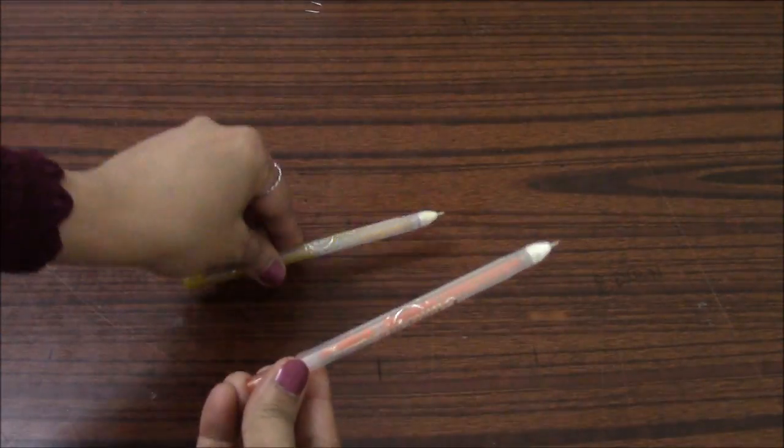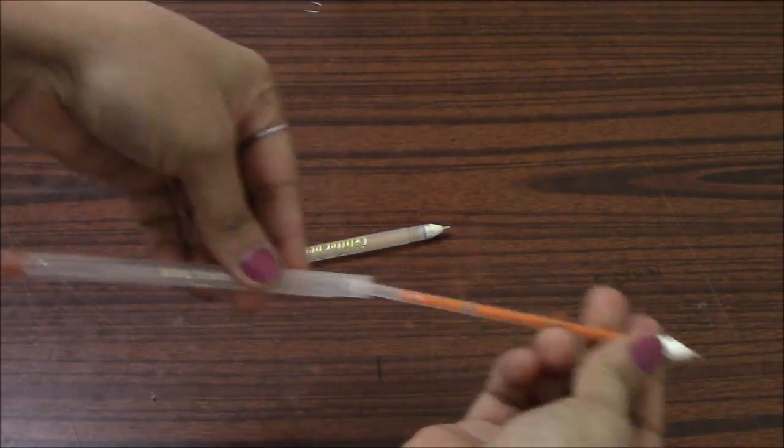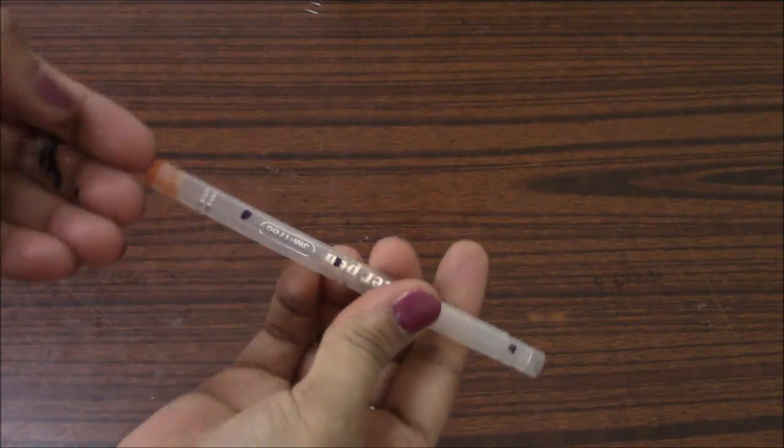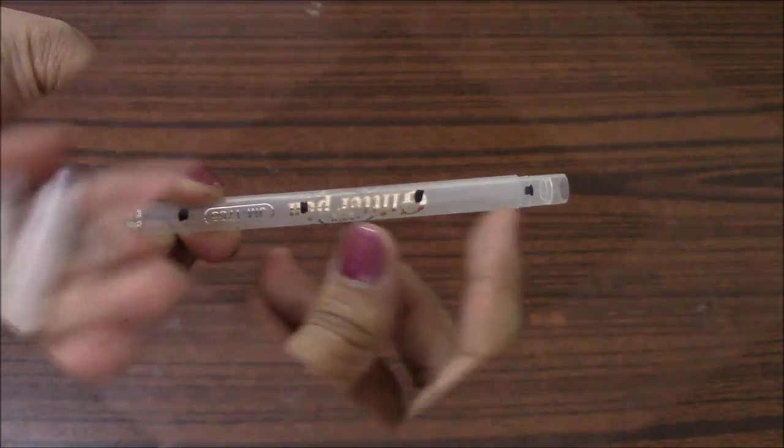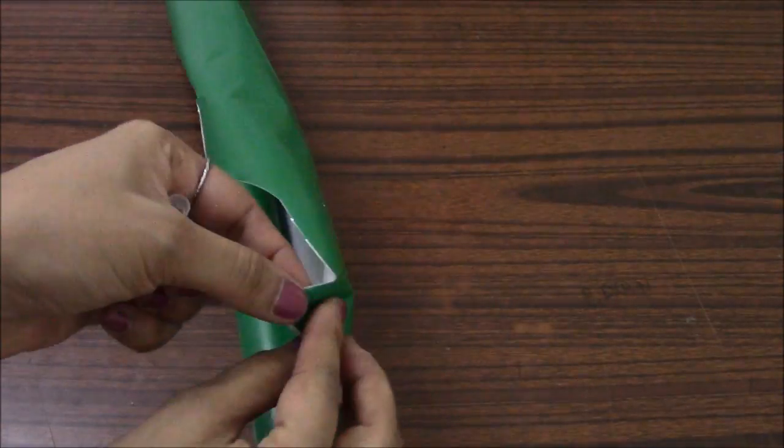Let's make the hinges by using 2 plastic pen tubes. Cut them into equal parts of about 3-4 cm each. Cover them as well.